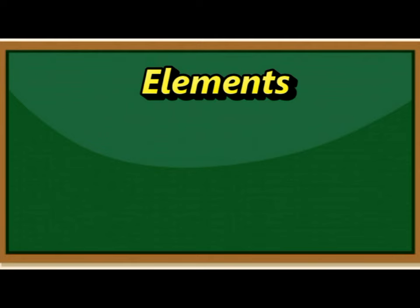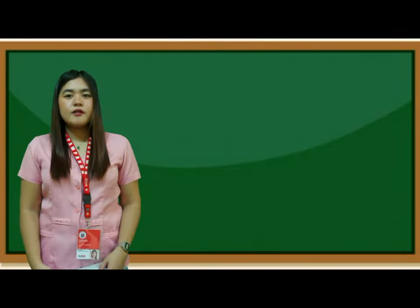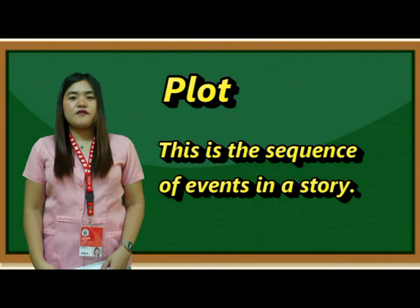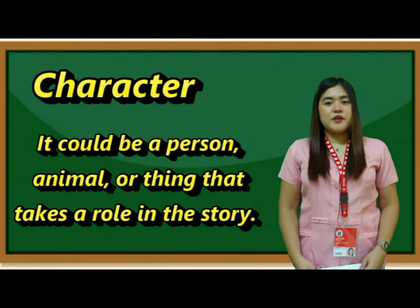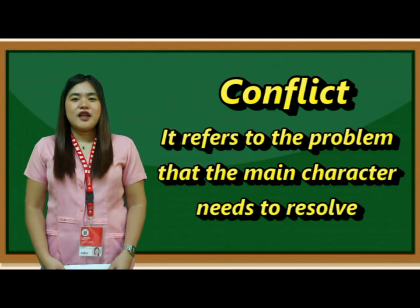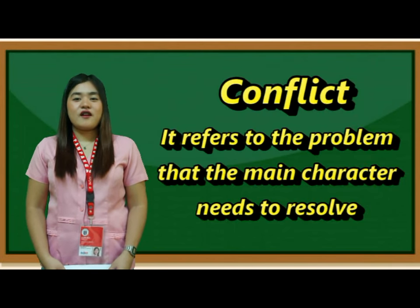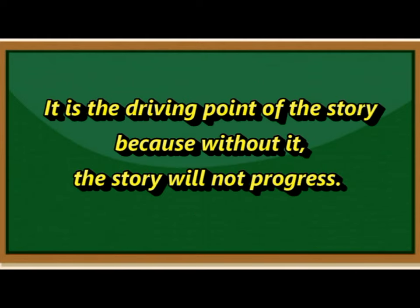Number two, elements. Fiction and non-fiction prose have different elements. These are the elements of fictional prose. Plot — this is the sequence of events in the story. Character — it could be a person, animal, or thing that takes a role in the story. Conflict — it refers to the problem that the main character needs to resolve. It is the driving point of the story because without it, the story will not progress.